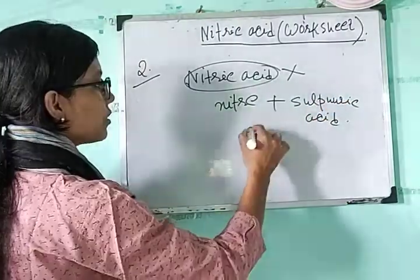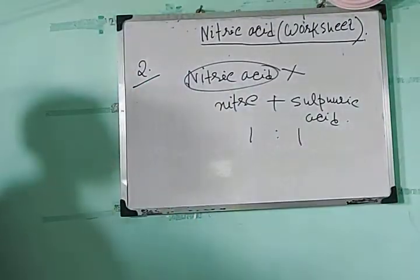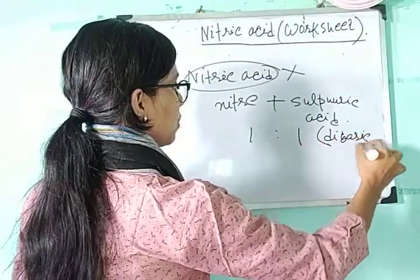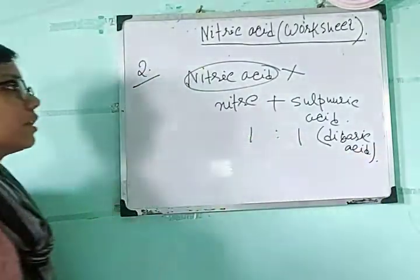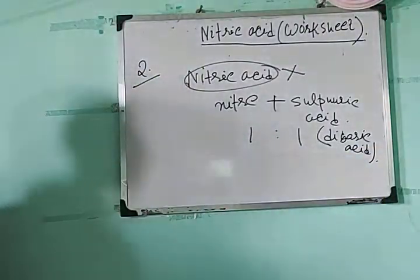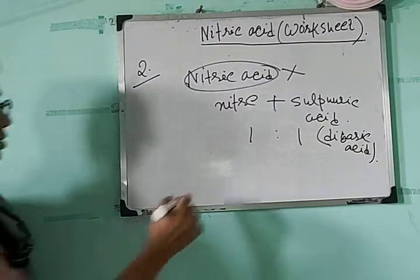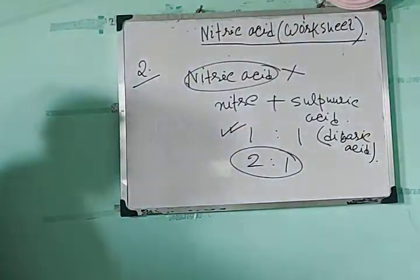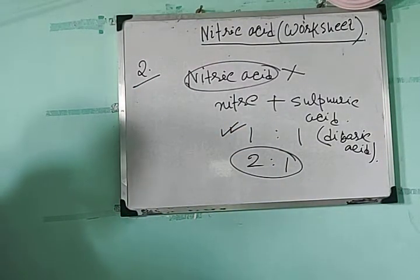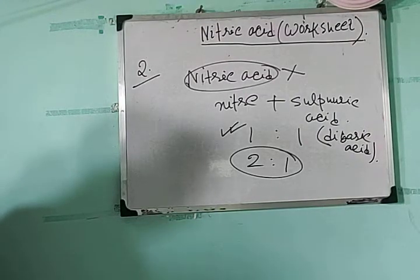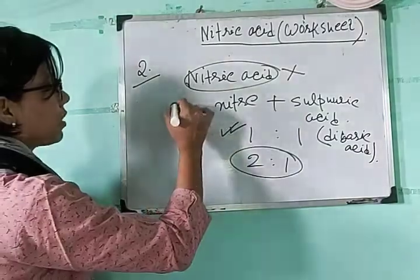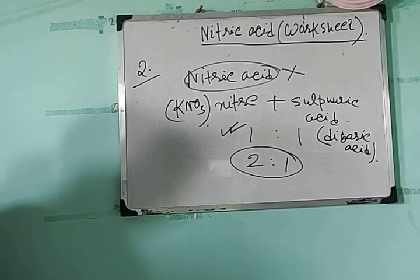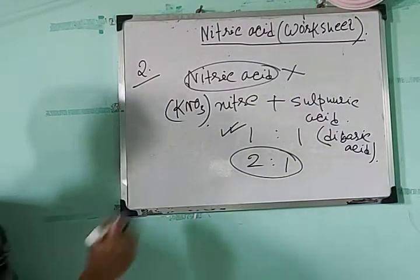So this nitric acid and sulfuric acid are taken in a 1:1 ratio. The answer actually lies in the equation. Nitric acid here refers to potassium nitrate — 'nitrogen' means potassium nitrate. So when potassium nitrate is treated with sulfuric acid...